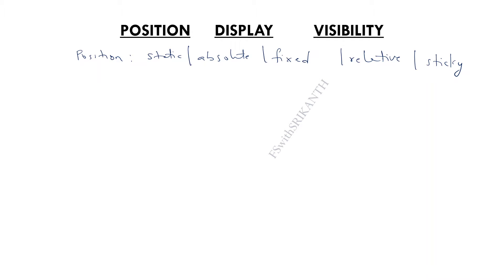The position property specifies the visual position of the element in the web page. Static is the default position. So static displays the element in its normal position, which is the default behavior.